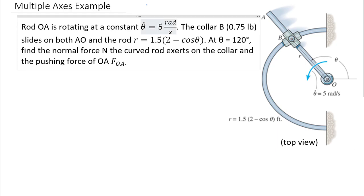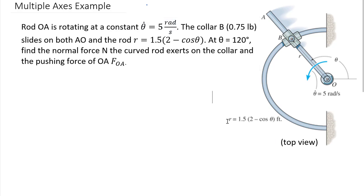In this problem we have a non-circular curve. The drawing doesn't show it explicitly non-circular, but I have a more accurate drawing in an interactive I'll show in a second. The equation for r is: r equals 1.5 times the function (2 minus cosine of theta). That tells us how r changes as a function of theta. Theta is measured from horizontal, basically from the positive x-axis. The angular velocity at this instant, theta-dot, is five radians per second.